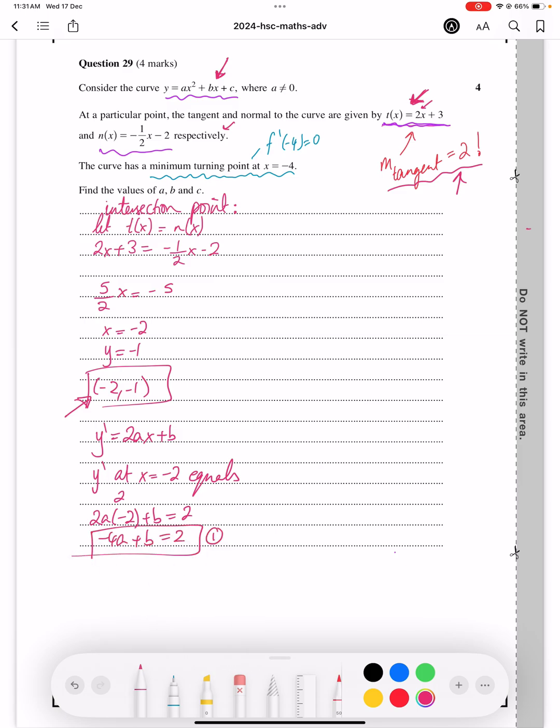We also know that y dash equals 0 at x equals minus 4, since they just told us that there's a stationary point there. So that gives you 2ax plus b as equaling 0, therefore minus 8a plus b equals 0, therefore b equals 8a. Box that, call that equation 2.